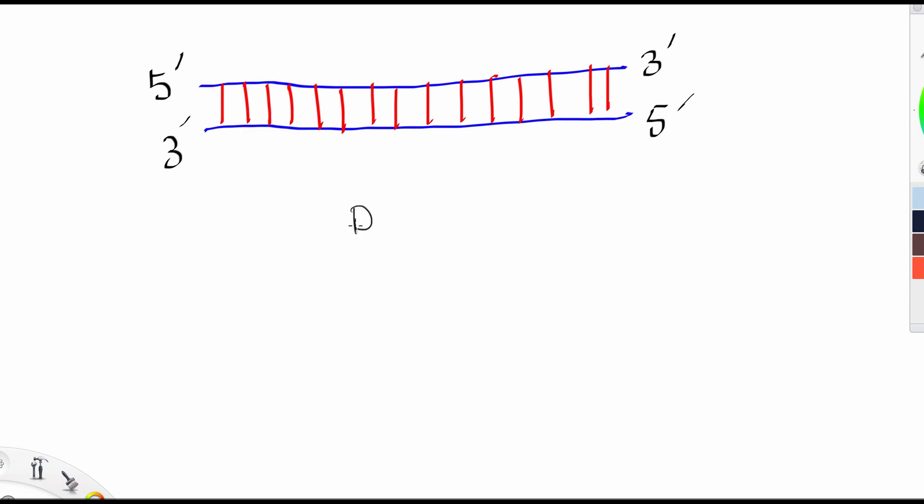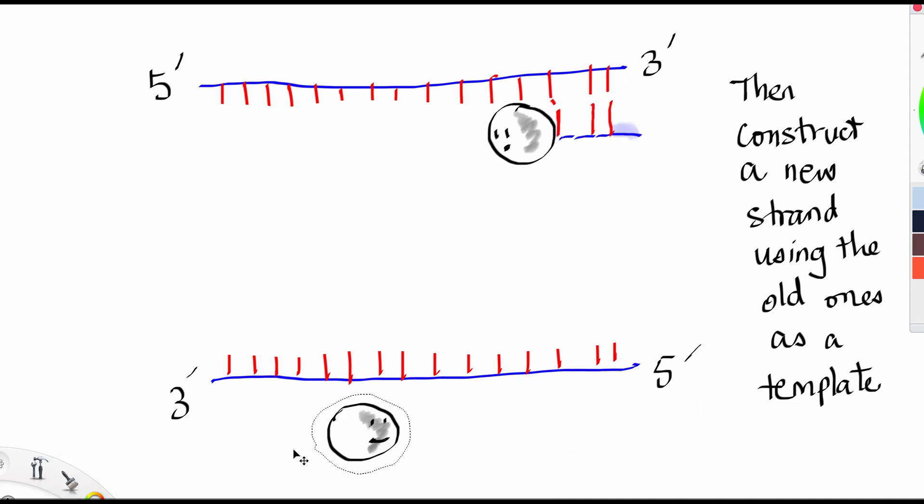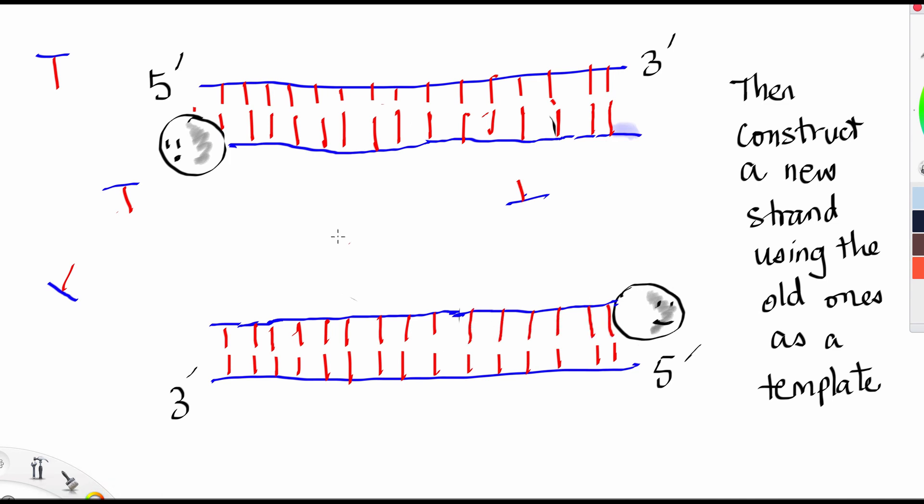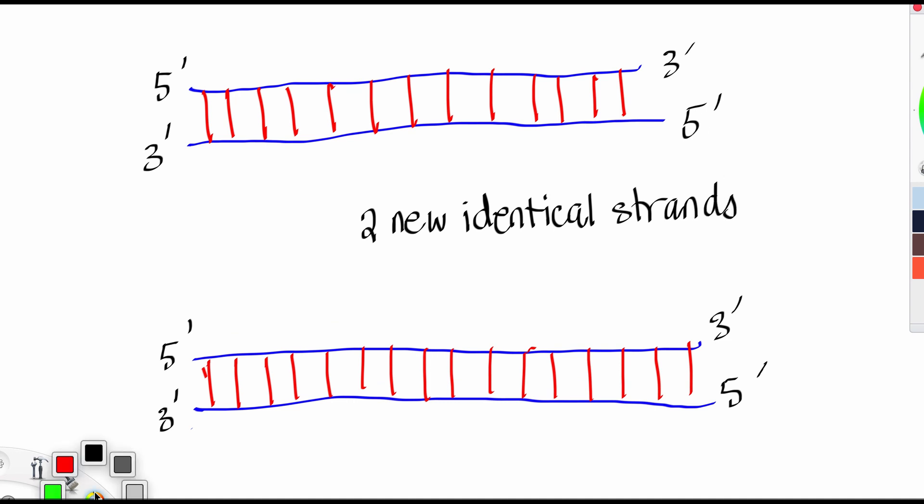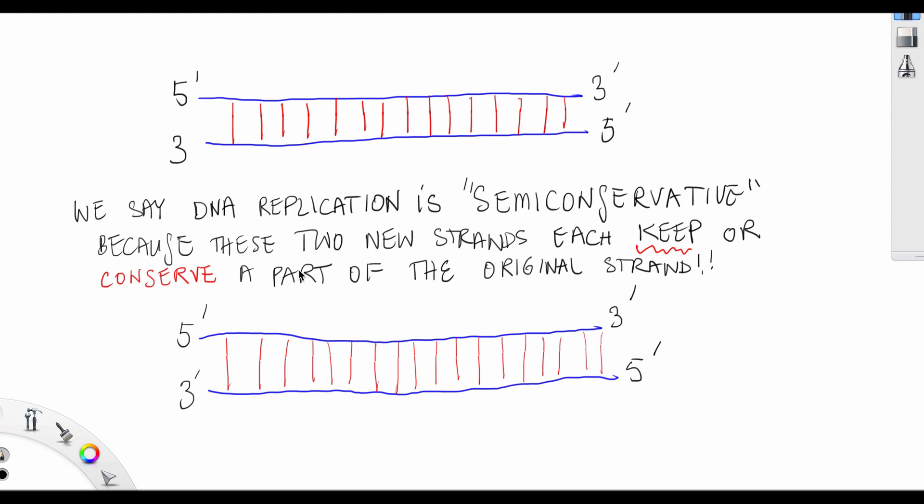So DNA replication happens by unzipping the strand and constructing the strand by using the old one as a template. The polymerase, DNA polymerase, grabs nucleotides that are floating around the cell to create the new identical strands. We say that DNA replication is semi-conservative because these new strands each keep or conserve a part of the original strand.